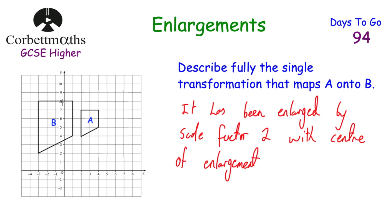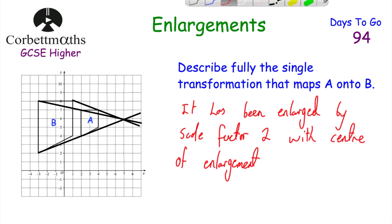To find the centre of enlargement, we choose corresponding points on the shapes — for example the top-left corners — and draw a line through them extending further. Then repeat with another pair of corresponding points, such as the bottom-left corners. Both lines pass through the point (7, 6), which we can verify with a third pair. So the centre of enlargement is (7, 6). The full description: an enlargement by scale factor 2 with centre of enlargement (7, 6).